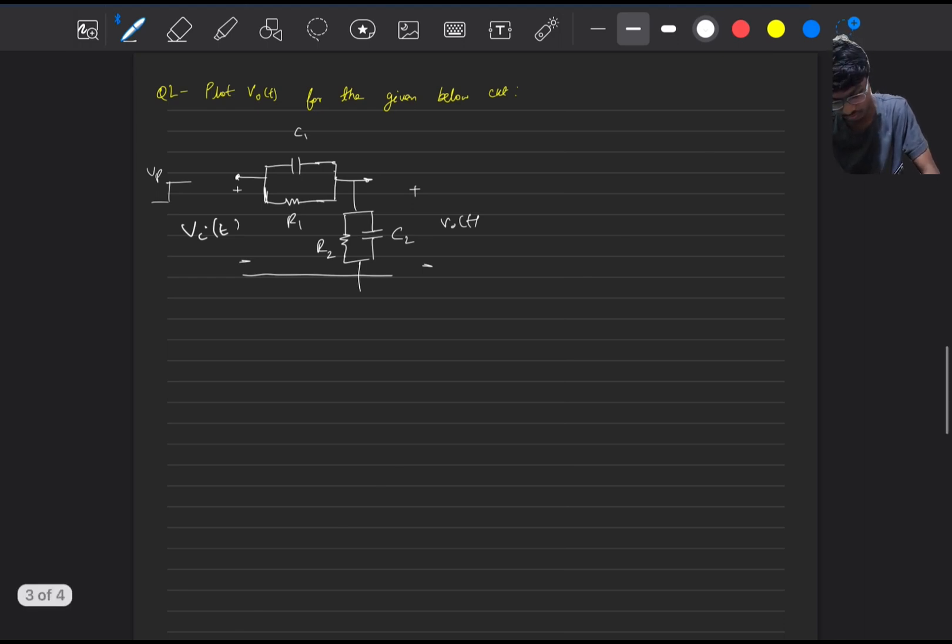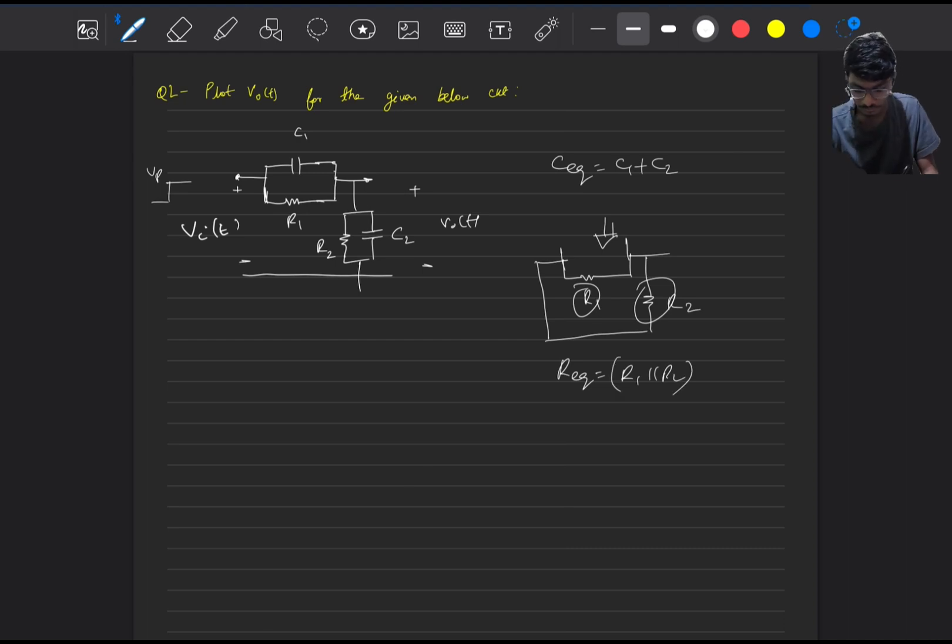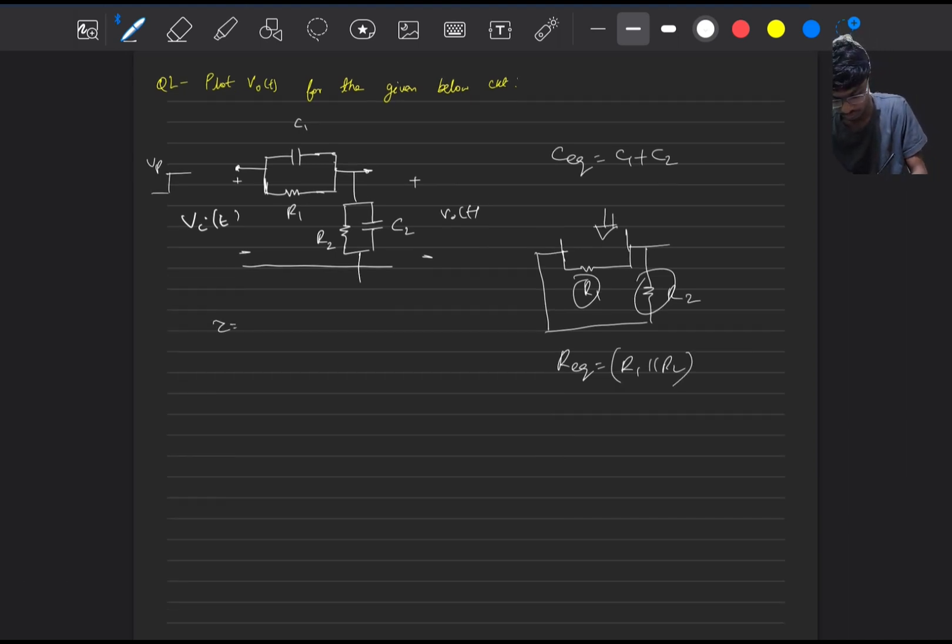For calculating the time constant we have already found out C equivalent which is C1 plus C2 as the voltages across them are dependent. And for calculating the equivalent resistance, we can just check the equivalence from one end of the capacitor only and short the input. Here the output plays no role. From this end we will see that R1 is parallel with R2. So R equivalent will be R1 parallel with R2. So the time constant of the circuit will be C1 plus C2 with R1 parallel with R2.